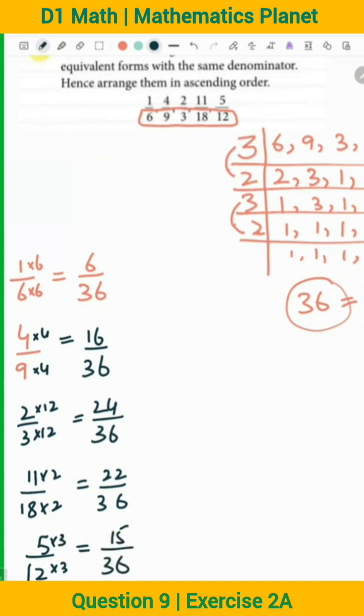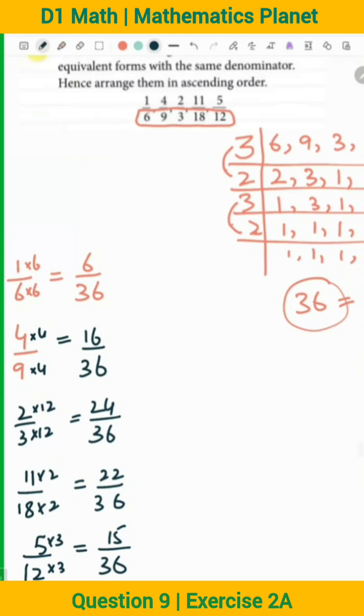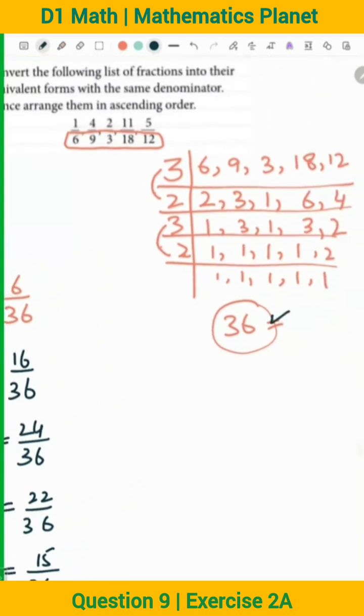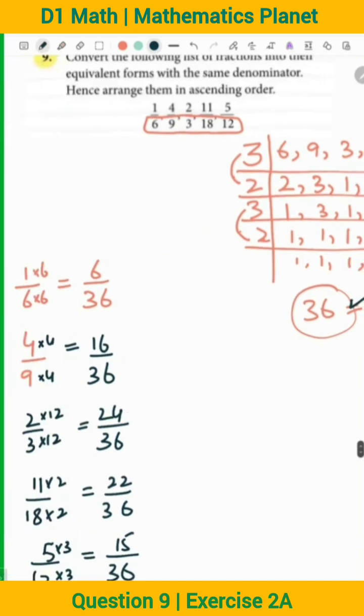So it means that whenever you have such a question, first of all, you have to find the LCM. When you find the LCM, the least common multiple is 36. So now you have to make all of the denominators equal to 36. You will multiply with the same number in the numerator and the denominator. So now you have 6, 16, 24, 22, 15. So it means all of the denominators are same.